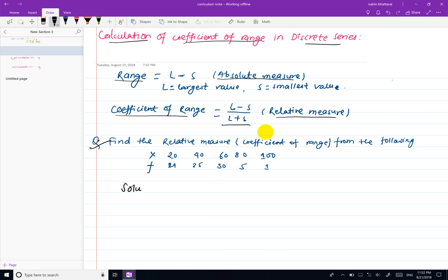Solution: The largest item is the maximum value. L equals 100. The smallest item is the minimum value. S equals 20.